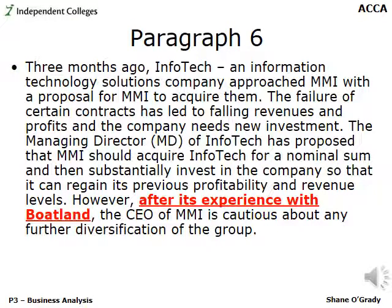Paragraph six focuses mainly on question 2B — whether MMI should acquire Infotech. However, one element is useful for 2A: after the Boatland experience, the CEO of MMI is cautious. This suggests Boatland was not positive, and their experience as a corporate parent has not always been successful. MMI made the First Leisure acquisition because they had more cash than they knew what to do with, stumbled on synergies, got overconfident, then made the Boatland acquisition — and only now realized they're not the fantastic corporate parent they thought they were.